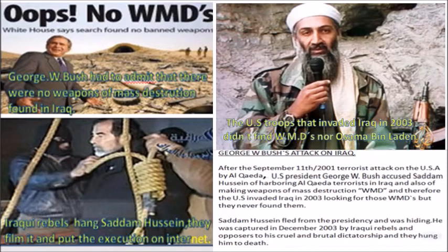Saddam Hussein fled from the presidency and was hiding. He was captured in December 2003 by Iraqi rebels and opponents to his cruel and brutal dictatorship, and they hung him to death.